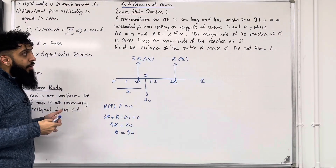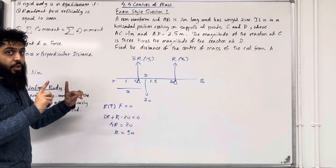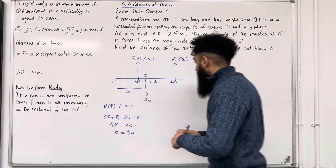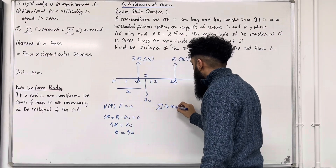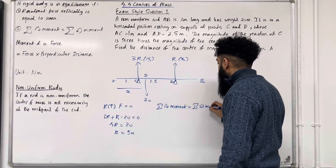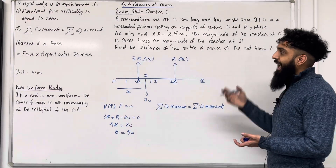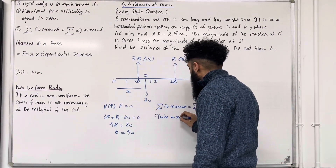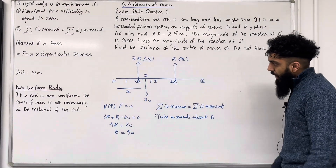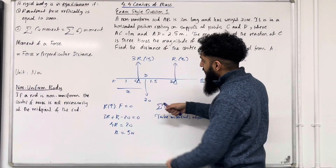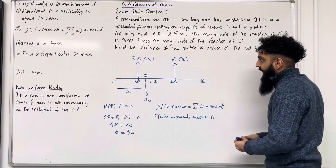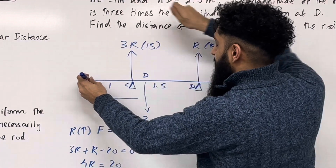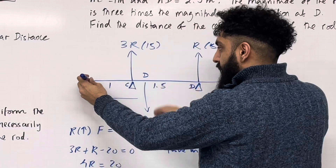Now we can work out the distance of the centre of mass of the rod from A — in other words we can work out X — by using condition number 2 of equilibrium: sum of clockwise moment equals sum of anticlockwise moment. We are going to take moments about A because we're trying to work out the distance of the centre of mass from A. We are calculating the moments of 3 forces: the 20, the 15 and the 5. If I hold my pen at point A and apply the 15 Newton force, it takes the entire body anticlockwise. If I apply the 5 Newton force, it also takes the entire body anticlockwise. On the other hand, if I apply the 20 Newton force, it takes the entire body clockwise.